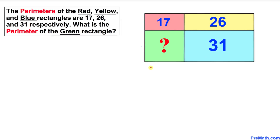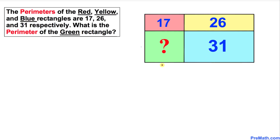Welcome to pre-math. In this video tutorial, the perimeters of the red, yellow, and blue rectangles are 17, 26, and 31 respectively. The question is: what is going to be the perimeter of the green rectangle? Let's go ahead and get started with the solution.